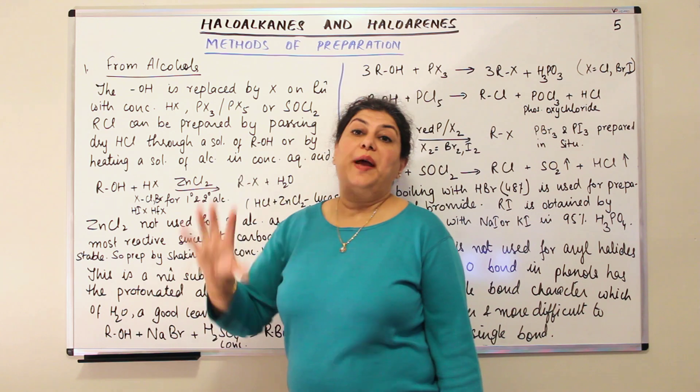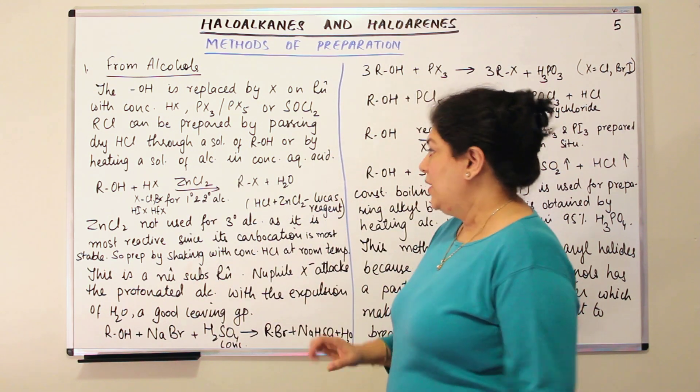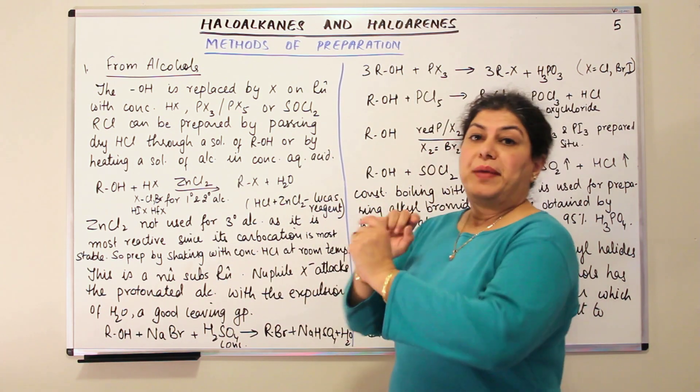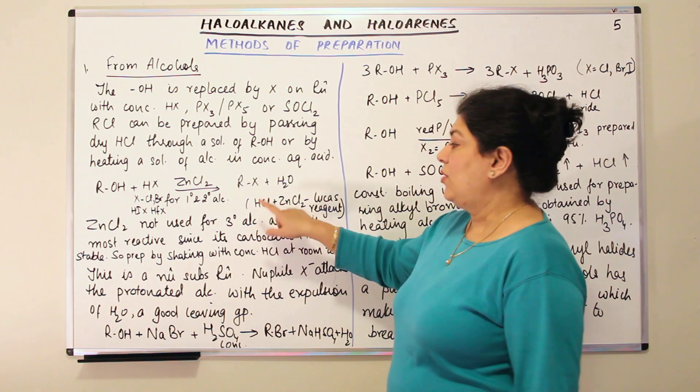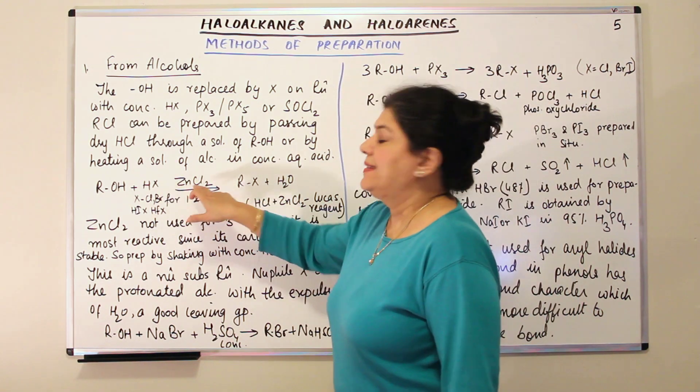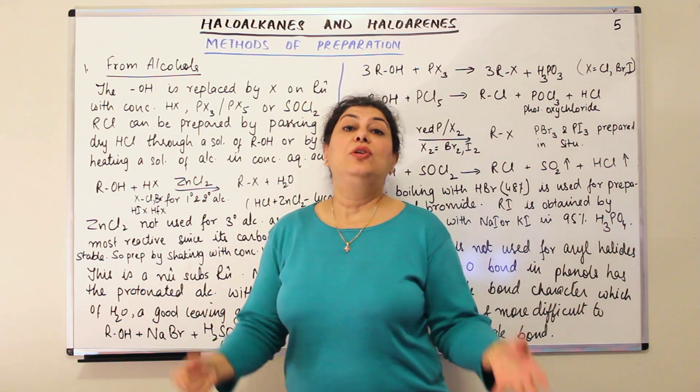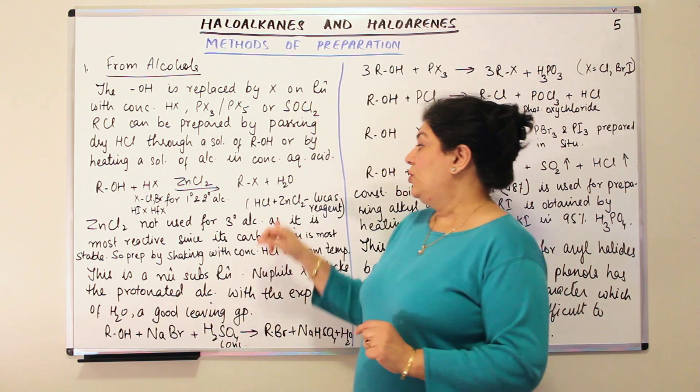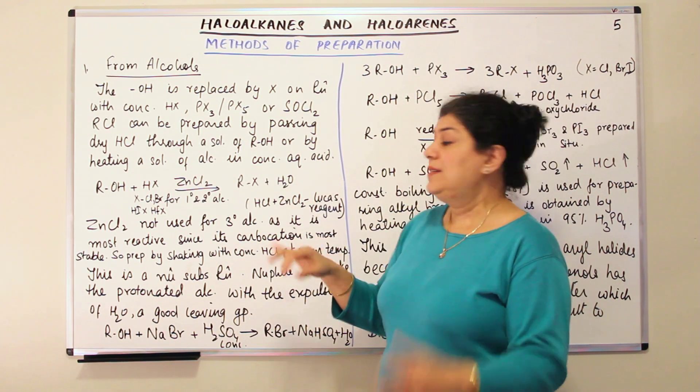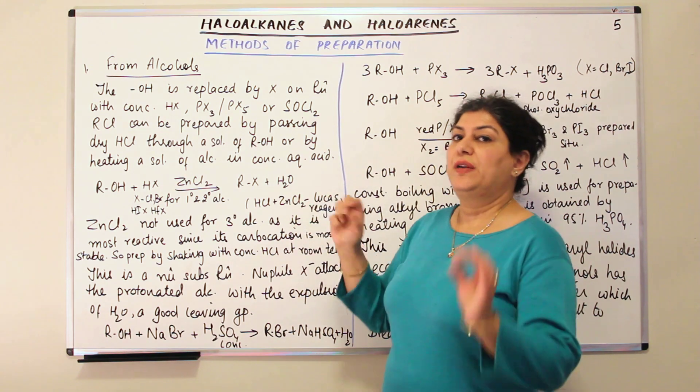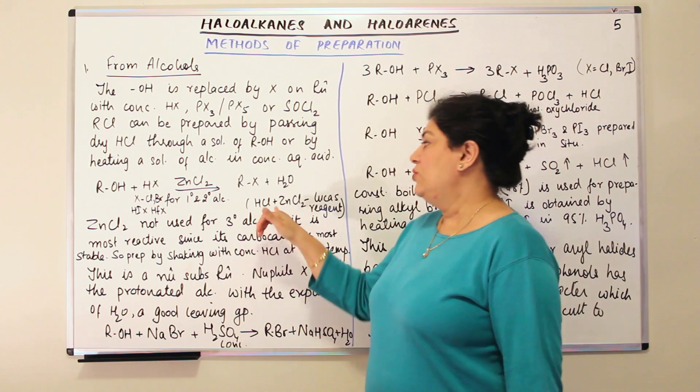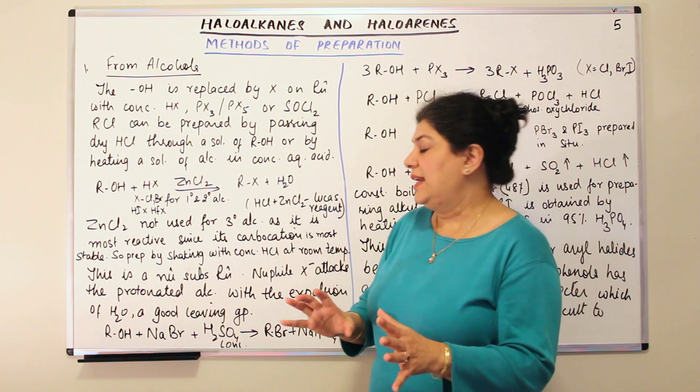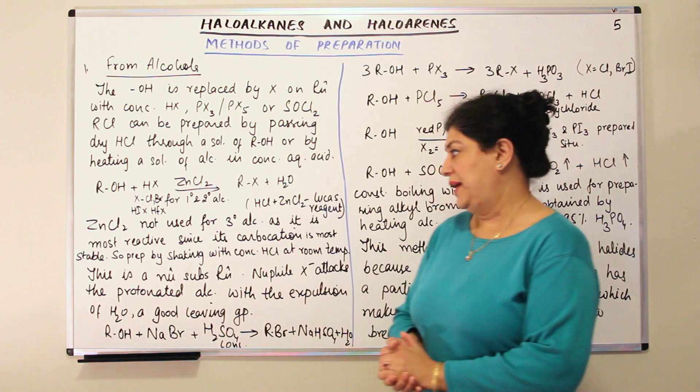This mixture between HCl and ZnCl2 is known as the Lucas reagent. So when you do your practicals you would go in for Lucas reagent. Lucas reagent is a mixture of HCl and zinc chloride.